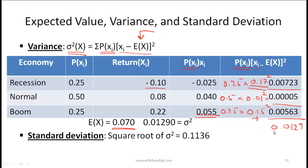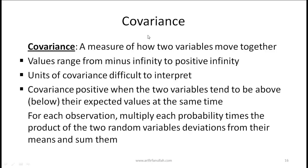To find the standard deviation, you simply take the square root of the variance. The square root of 0.0129 gives 0.1136.